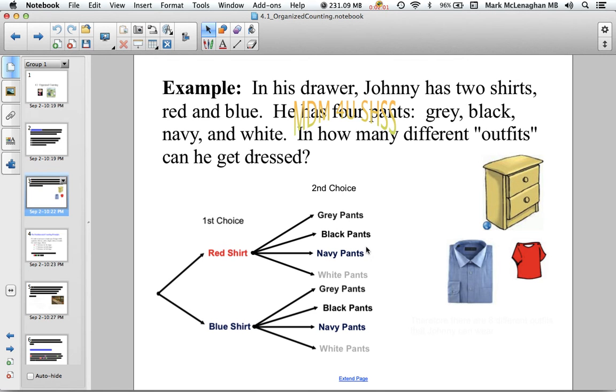We choose one of the shirts and one of the pants. Then you can see from the count: one, two, three, four, five, six, seven, eight. So in total, Johnny has eight different outfits to wear.